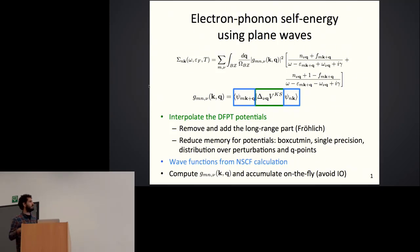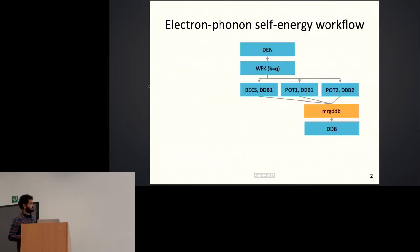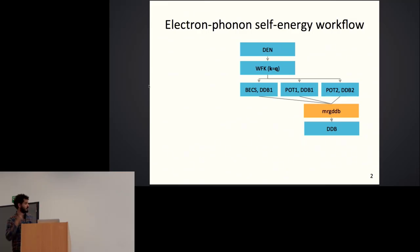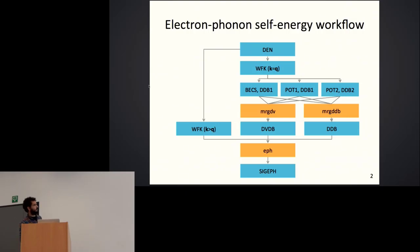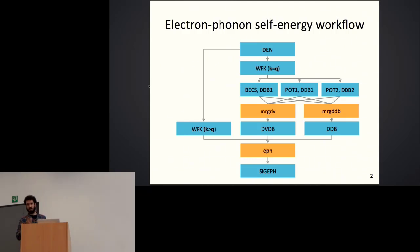We then compute the wave functions from a standard non-self-consistent calculation. With these two ingredients — the DFPT potentials and wave functions — we compute the G matrix elements on the fly as scalar products inside the code, without writing them to file. The workflow for a standard DFPT calculation produces the DDB for phonon dispersion. To compute the self-energy, one additionally needs the derivative of the potentials and a wave function file from a non-self-consistent calculation, all combined in the EPH driver to produce the SIG_EPH file containing the self-energy.